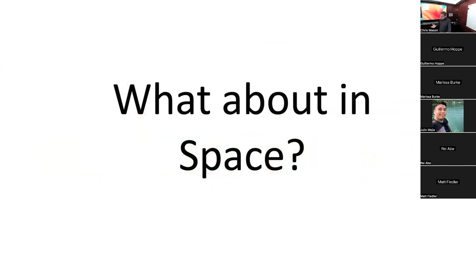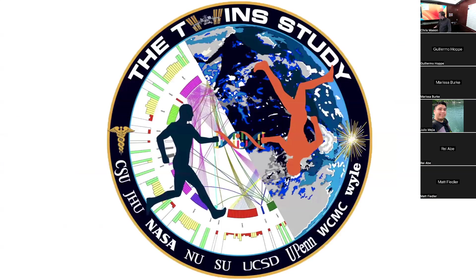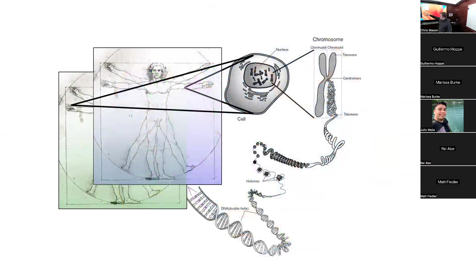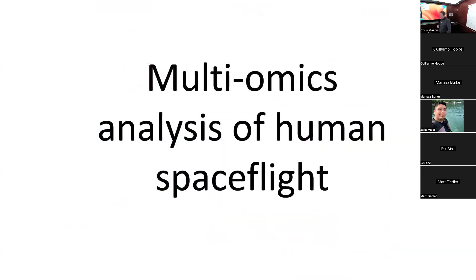One place we've been looking at single molecule epigenomics is in space. We had twin astronauts — Scott Kelly went to space for a year, and Mark Kelly (now a Senator) stayed on Earth. Working with NASA as one of the labs in the NASA twin study, we sent someone to space for a year and looked at everything that possibly changes: genetics, epigenetics, proteins, antibodies, telomere lengths, metabolomics, microbiome, cognitive metrics — a real multi-omics analysis of human spaceflight.